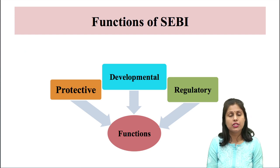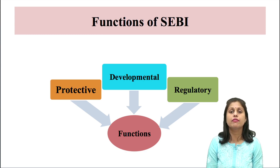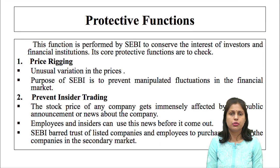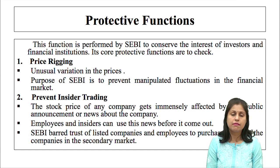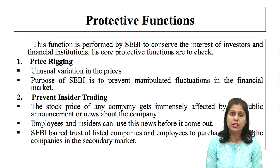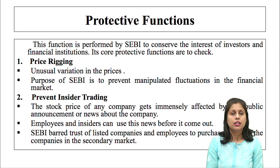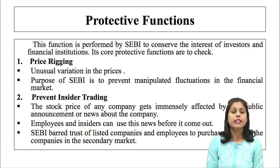Next are the functions of SEBI. SEBI's functions are divided into three parts: Protective functions, Developmental functions, and Regulatory functions. The protective function is performed by SEBI to conserve the interest of investors and financial institutions. Its core protective functions include checking price rigging — that is, price fixing — where companies manipulate share prices, artificially inflating or deflating them to mislead potential investors. Another protective function is to prevent insider trading.